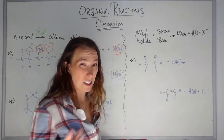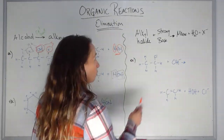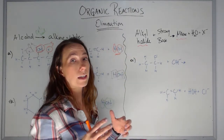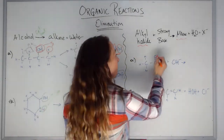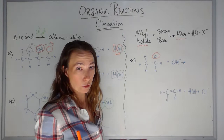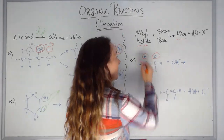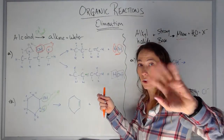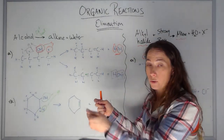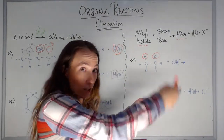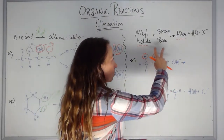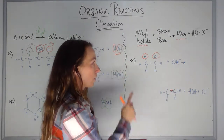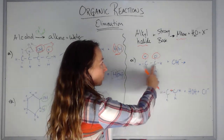What we're going to do is take the alkyl halide and form an alkene — I need to create a double bond. So I'm going to take off the Cl and the neighboring H. The carbon lets go of the Cl, and the neighboring carbon lets go of the H, and then those two carbons can grab onto each other and form the double bond.